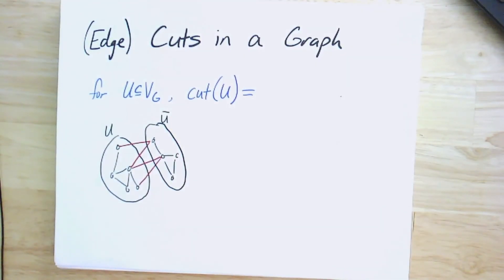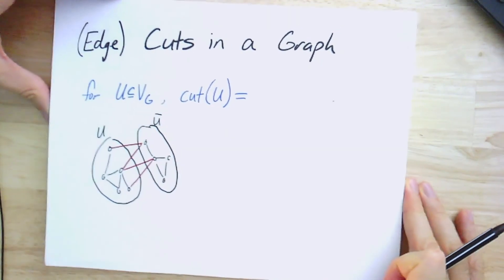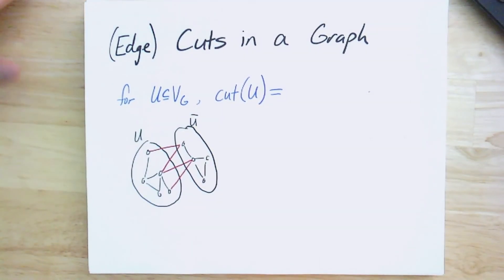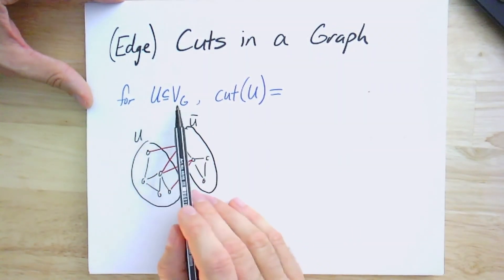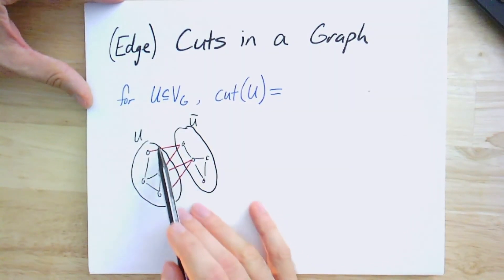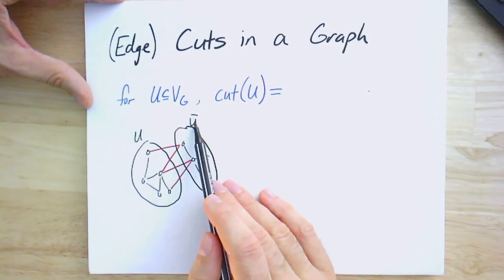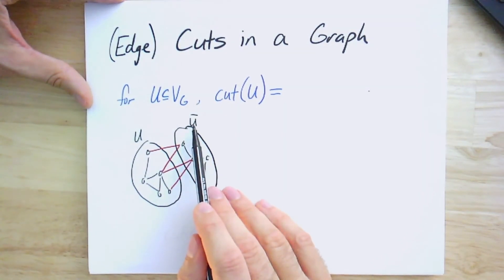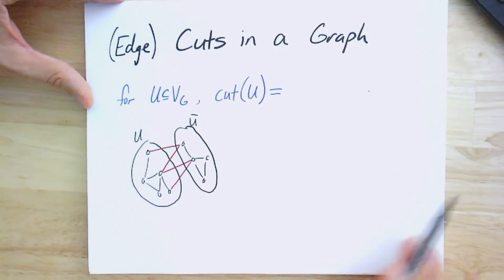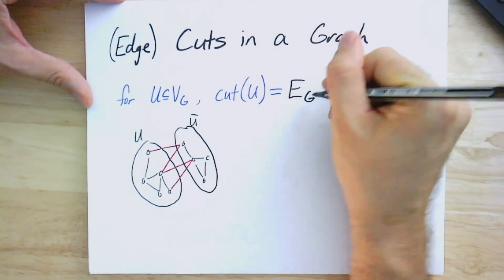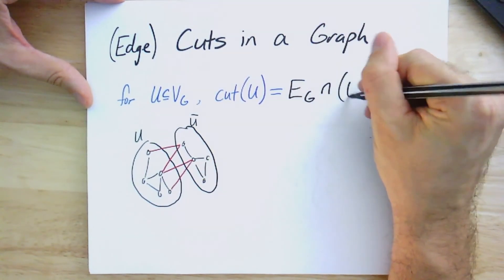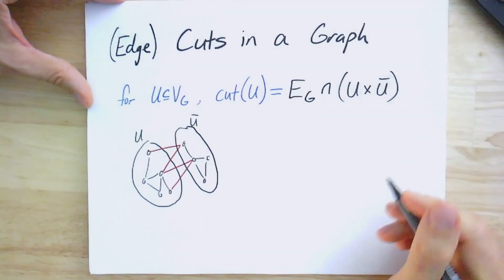Now keep that in mind, and we're going to talk about something which at first looks a little different. It's called the cuts in a graph, and actually, to be more specific, edge cuts in a graph. So let's take a subset of vertices, we call it U. It's a subset of the vertices. So here's a graph, and I've got U here, and this is U complement, right? It's all the vertices in the graph that are not in U. And the cut for U is going to be all the edges that go from within U to outside of U. So they have one end in U.